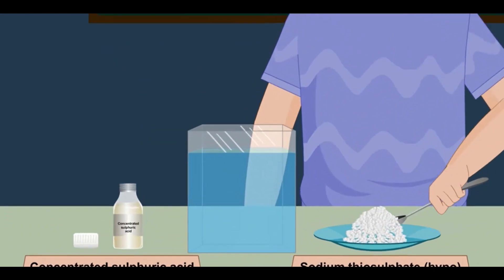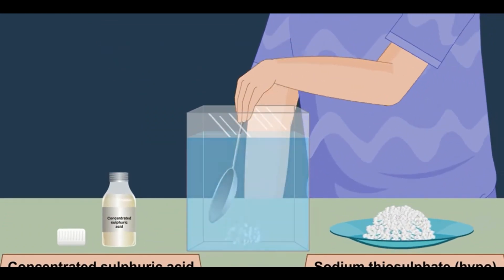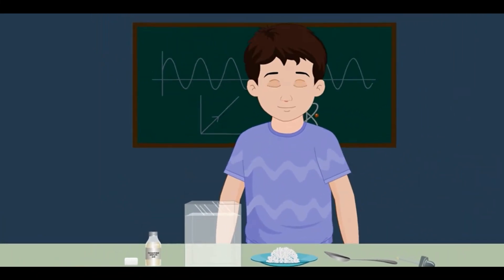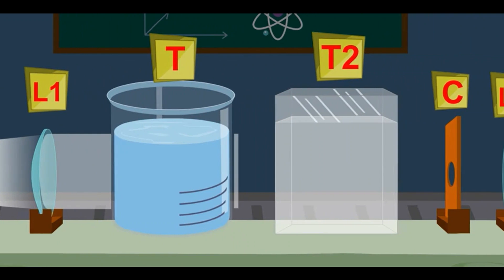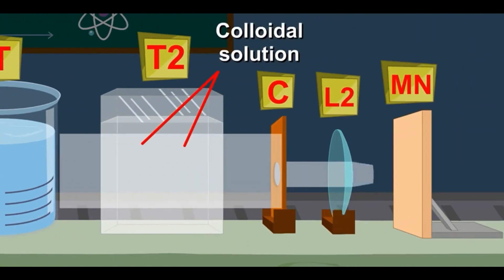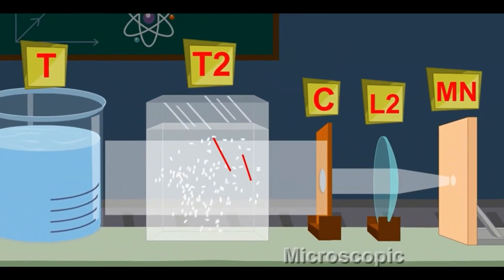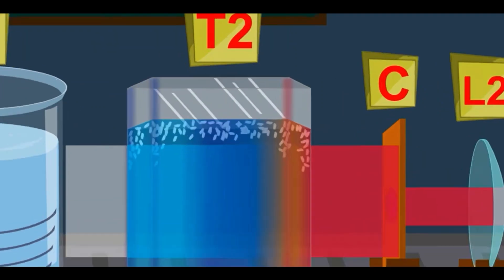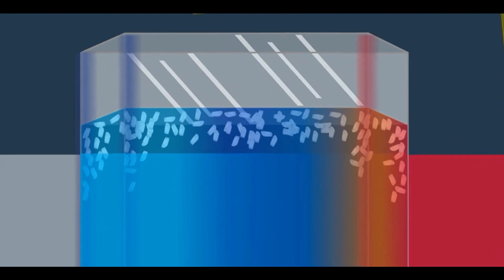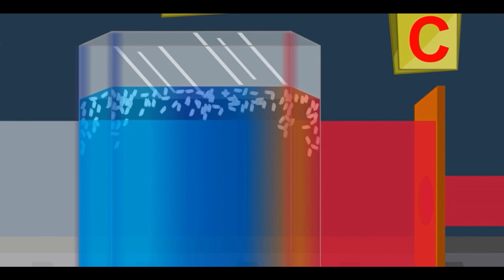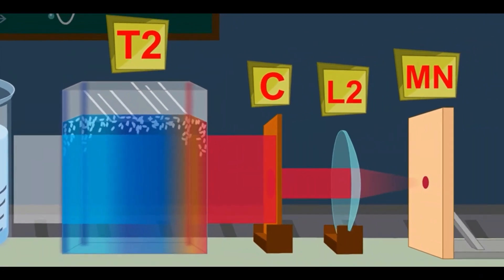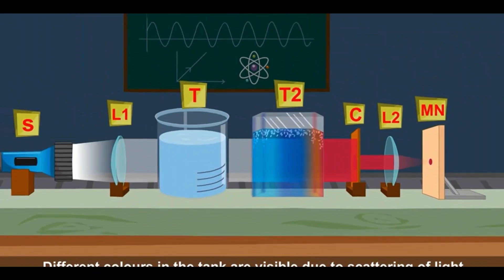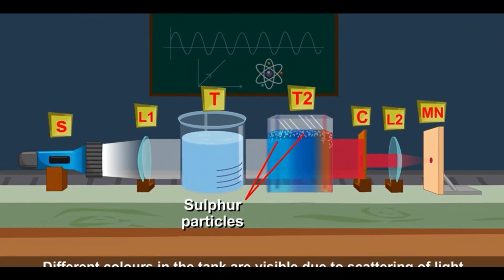Next, dissolve about 200 grams of sodium thiosulphate (hypo) in clean water in the tank, and add about 1 to 2 ml of concentrated sulfuric acid to the water. You will observe that the path of the light becomes visible through this colloidal solution. After about 2 to 3 minutes, fine microscopic sulfur particles begin to precipitate. As sulfur particles form, you can observe blue light from three sides of the glass tank. When viewed from the fourth side facing the circular hole, first an orange-red color and then a bright crimson red color are observed on the screen.